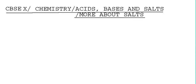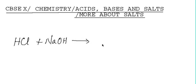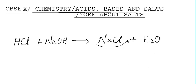So far in this chapter we have covered the properties of acids and bases, and we have seen that when acids react with bases they produce salt and water. We can define that salts are those substances which are produced during the reaction of acids and bases, and these kinds of reactions are known as neutralization reactions.